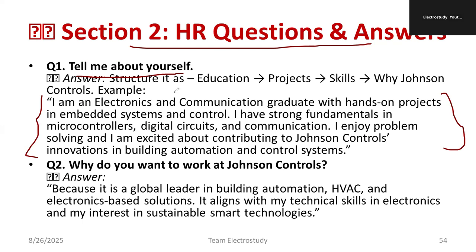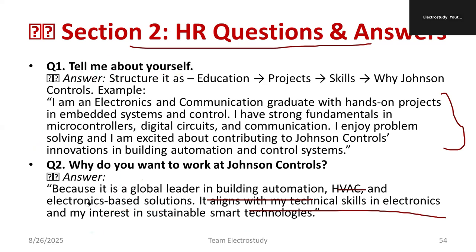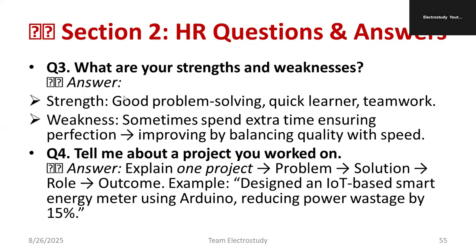Why do you want to work at Johnson Controls? Because it is a global leader in building automation, heating, ventilation, cooling, and electronics-based solutions. This aligns with my technical skills in electronics and my interest in sustainable smart technology. You need to correlate the company profile with your career aspirations diplomatically.